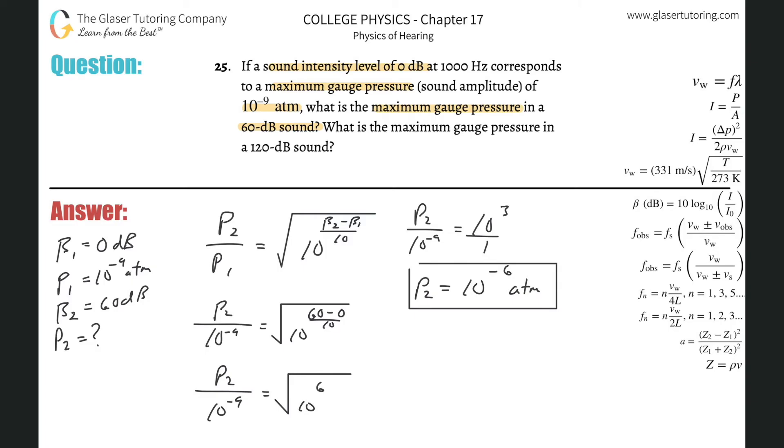Now what's the maximum gauge pressure in a 120 decibel sound? We're just going to do this one quick because it's the same thing. So it's p2 all over the p1, which was 10 to the minus 9, equals the square root of 10 to now the 120 minus 0, all over 10.